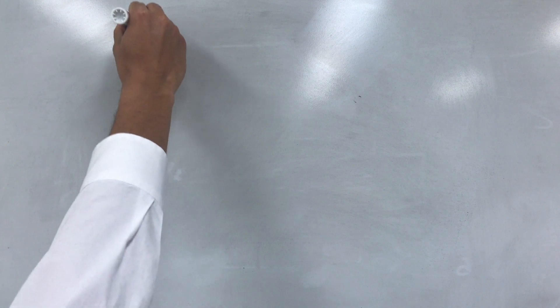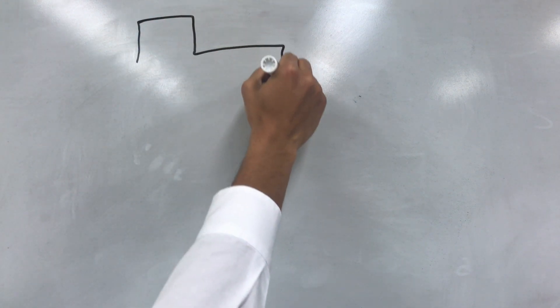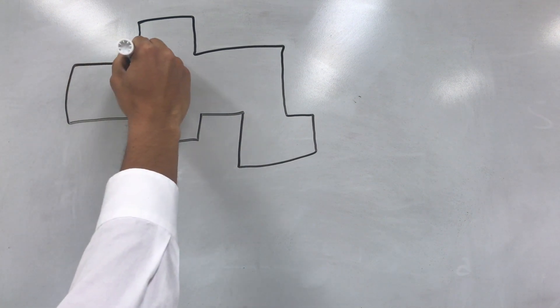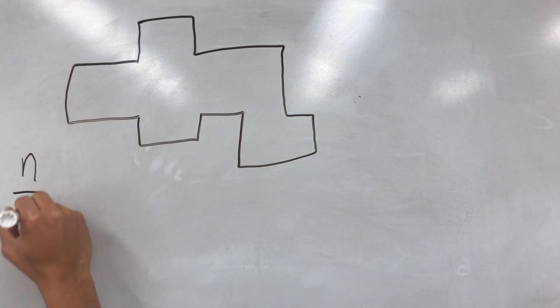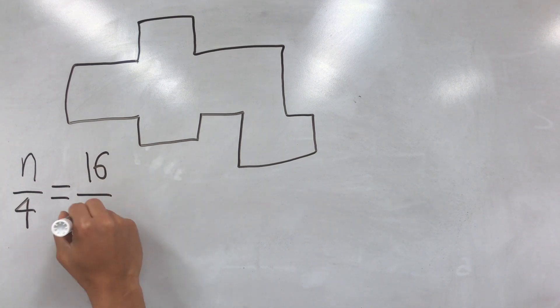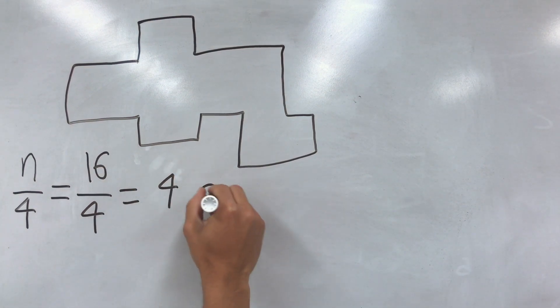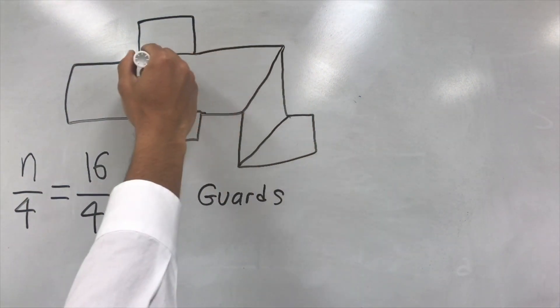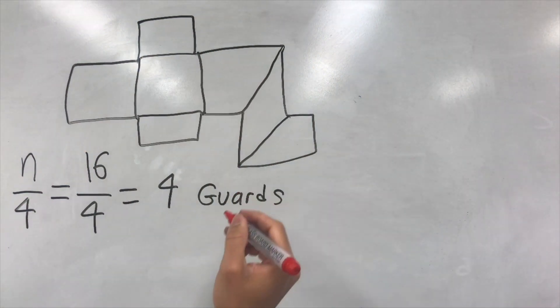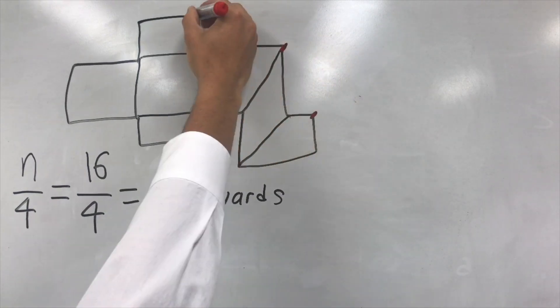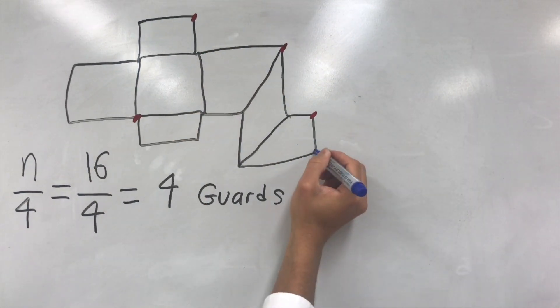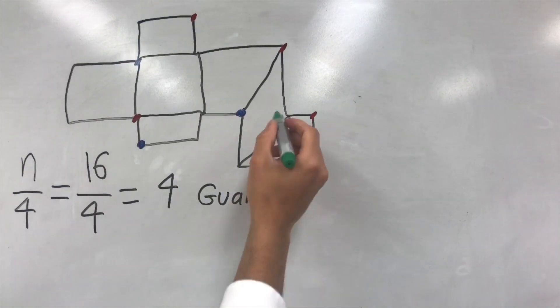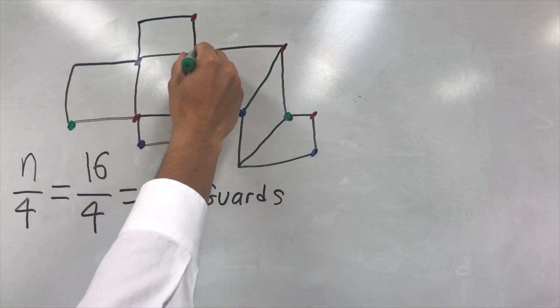An extension of the previous problem is orthogonal polygons, polygons whose interior angles are either 90 degrees or 270 degrees. If there are n corners, the orthogonal art gallery theorem claims that there are n over 4 guards at most needed to cover the entire polygon. We will first dissect it into convex quadrilaterals and then use the same method as before of chromatic coloring to find the maximum amount of guards needed to cover the entire polygon. We can then use the same proof as before except replacing n over 3 with n over 4.